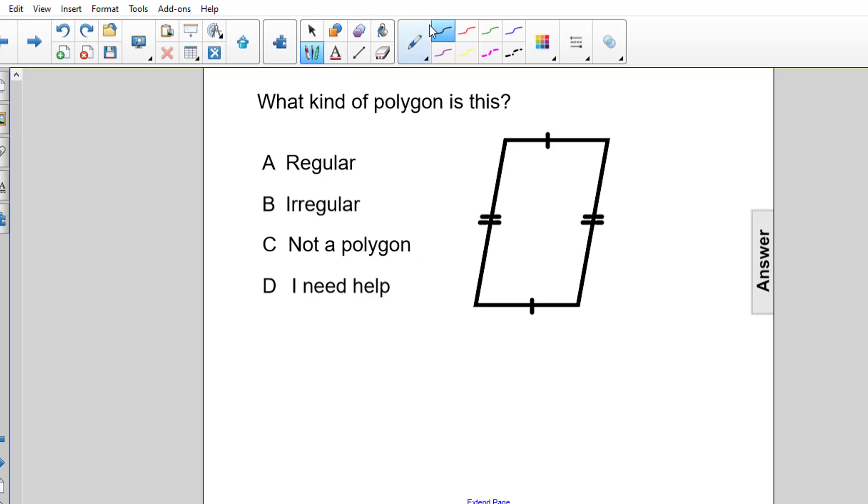Well, first we notice that this does meet the criteria for being a polygon, so we can eliminate answer choice C, and we're left now with two options. Is this a regular polygon or an irregular polygon?